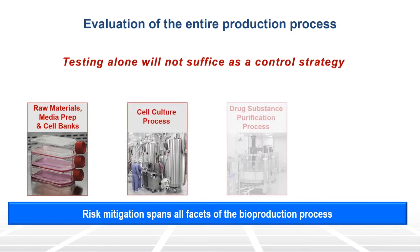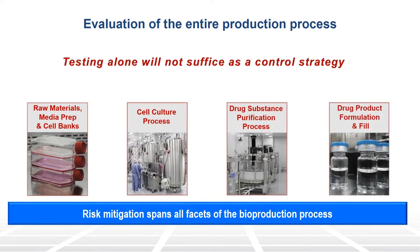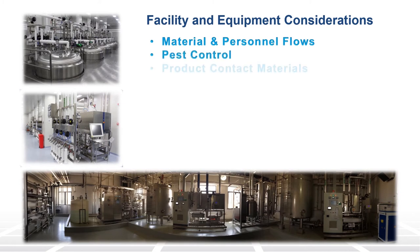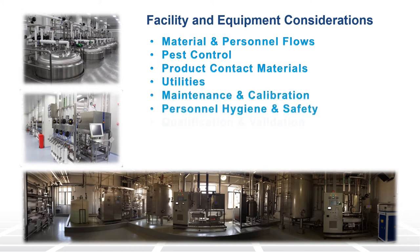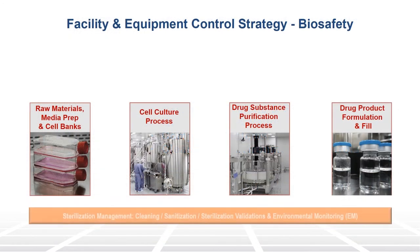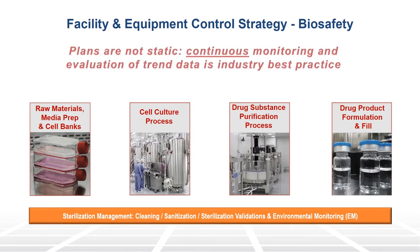A risk mitigation plan must span all elements of the bioproduction process including facilities and equipment that impact or come in contact with the product. For example, a control strategy should include a sterilization management and validation plan. Sanitizer efficacy studies for all suites and equipment, as well as container closure and package integrity evaluations, are expected, as are plans to evaluate extractables and leachables from process contact surfaces.